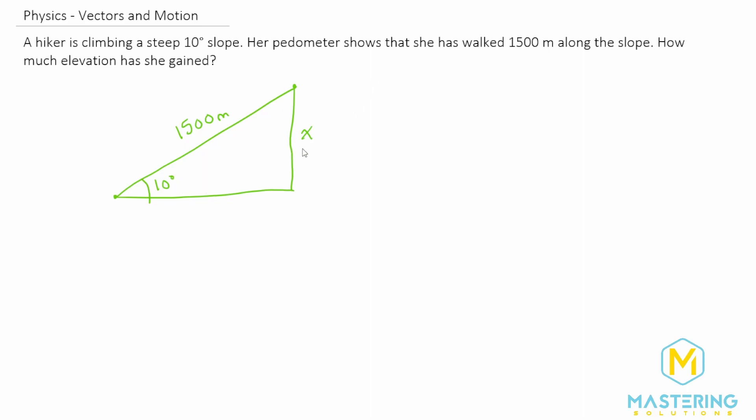So we'll be using the sine in SOHCAHTOA. Sine of the angle is equal to the opposite over the hypotenuse.